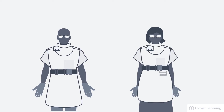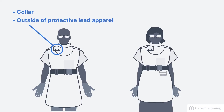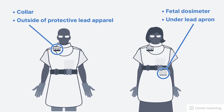In order for the dosimeter to provide accurate readings, it must be worn correctly. Rule one: wear it at work, always at work, and only at work. Rule two: wear the dosimeter at the correct location — dosimeters should always be worn at the collar, outside of protective lead apparel. Wearing the dosimeter anywhere else can result in an incorrect dose report. Expecting mothers wear an additional dosimeter called the fetal dosimeter at the level of the waist, worn under the lead apron, since that's closest to the baby.